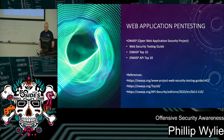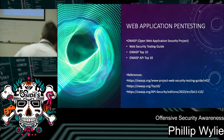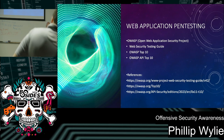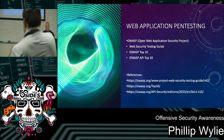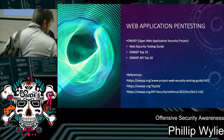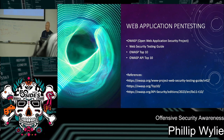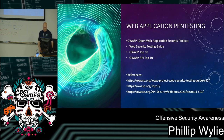For web application pen testing, one of the best resources out there is OWASP. They have their testing guide, the OWASP Top 10, API Top 10, and now resources for LLMs and IoT — they're constantly producing new content. There are projects listed there for new tools, types of testing, and the most popular vulnerabilities.